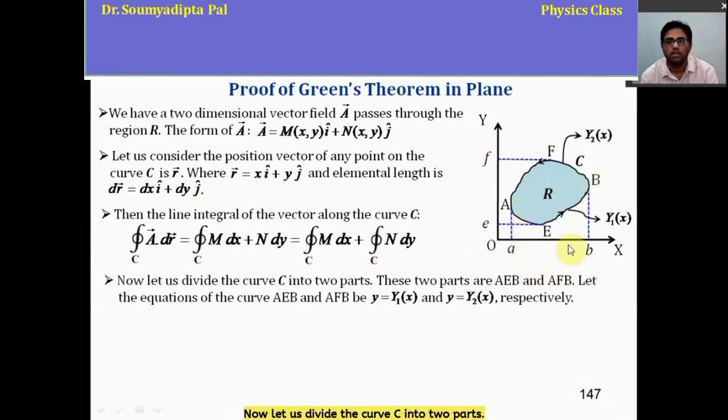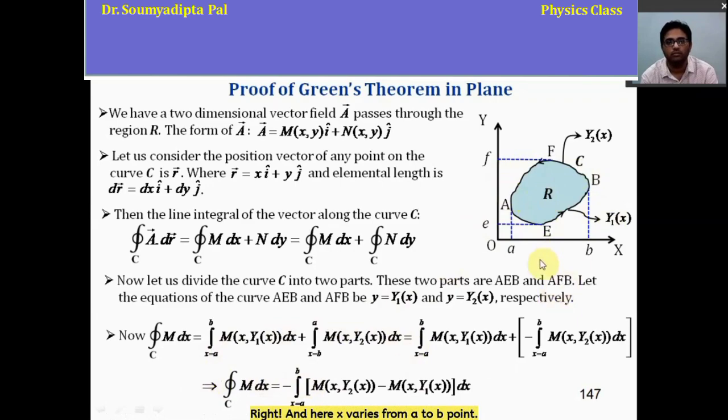Now, let us divide the curve C into two parts. These two parts are aEB and aFB. And they can be represented by these equations. Because the y-coordinate is dependent on x. At different points in x-axis, the y-coordinates of these two curves will be different. And here, x varies from A to B point. So, to calculate this close line integration mdx, once we have to integrate along aEB path from x equal to A to x equal to B. And then we have to integrate along BFA path from x equal to B to x equal to A.